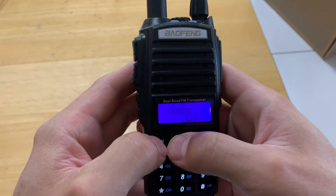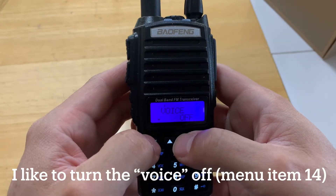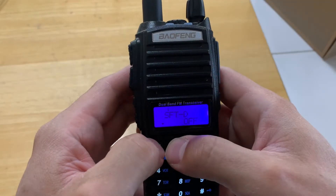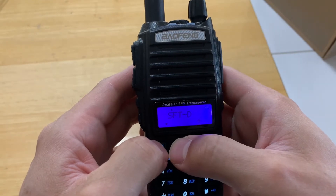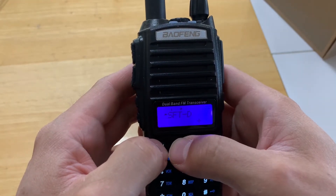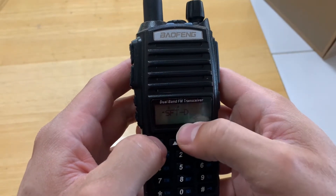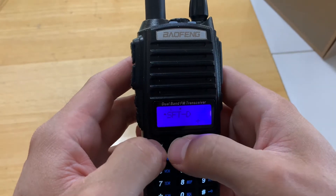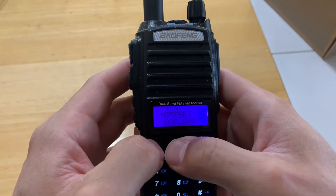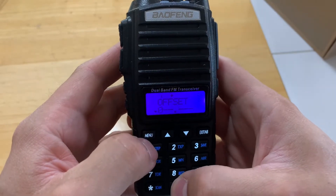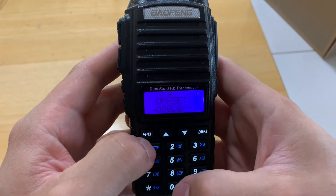I hate these beeps, so I'm turning those off. So this is our shift. Now, this repeater that we have here in town I believe is a positive shift. That means in order to key up the repeater, not only do I use the tone of 88.5 Hz on CTCSS, but the frequency I need to use to key up the repeater is 147.8 MHz. So I need my shift to be positive from the frequency I'm using to listen. Now I'm going to program in the actual shift — hit menu to open up the editing and enter 0, 0, 0, 6, 0, 0 — then press menu again to save it.